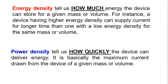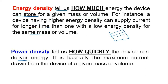Energy density basically tells us how much energy the device can store for a given mass or volume. A device with higher energy density can supply current for a longer time than one with low energy density for the same mass. Power density tells us how quickly the device can deliver energy — if you need to do more work in a short time, that is what we call power density.